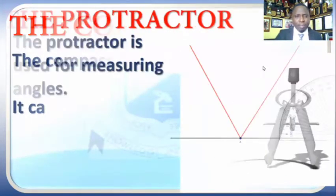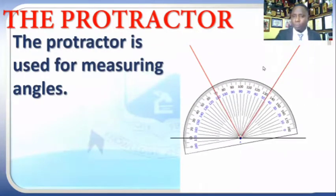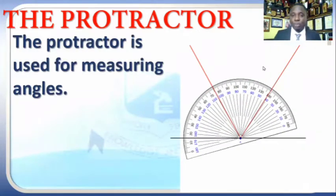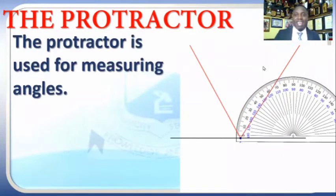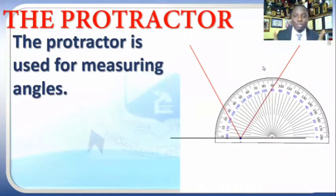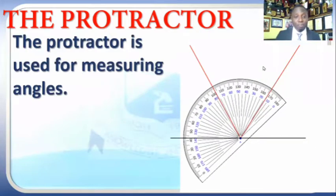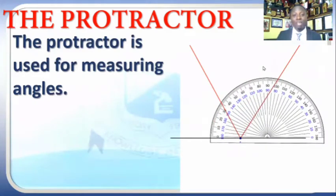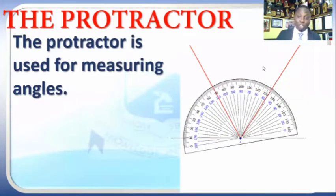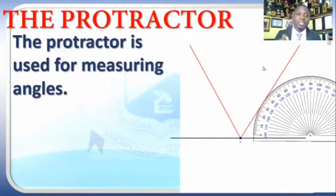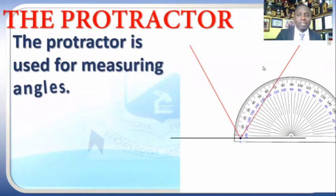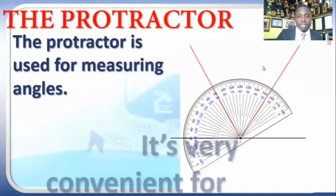The next instrument is our protractor. What is a protractor? A protractor is used for measuring angles. Now, a protractor is not used for drawing or constructing angles — it is only used for measuring angles. I've seen cases where students are given an angle to construct and because we have markings on our protractor, they quickly go to the protractor, mark it out and draw it. No, that is the wrong usage of a protractor. It is simply used to measure angles.